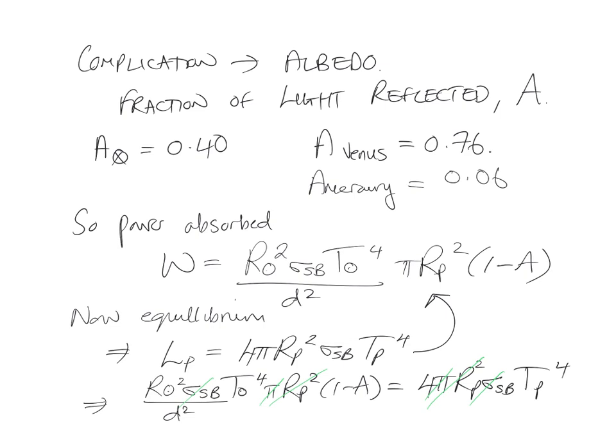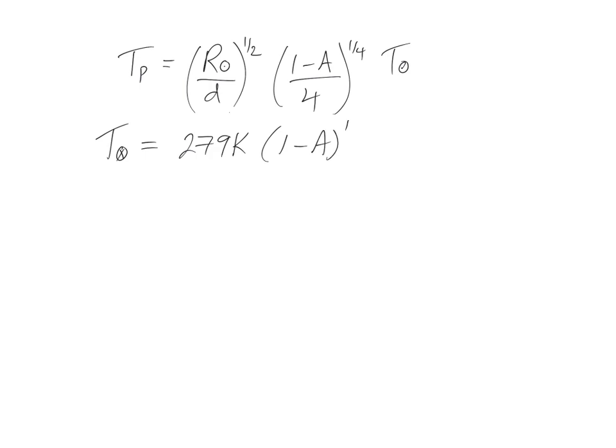And then if we make this all a little bit neater, we end up with this equation for the temperature of a planet: it's going to be the radius of the sun divided by the distance between the sun and the planet, the square root of that, and then it's (1 minus the albedo over 4) to the quarter power, times the temperature of the sun. So if you put in reasonable numbers, you can end up with the equilibrium temperature of the Earth being around about 279 Kelvin times (1 minus the albedo) to the quarter power.